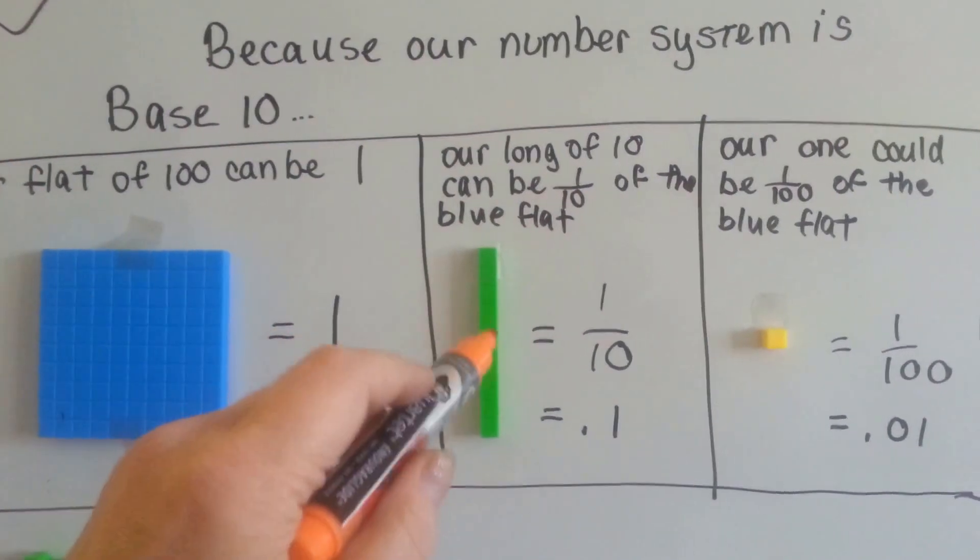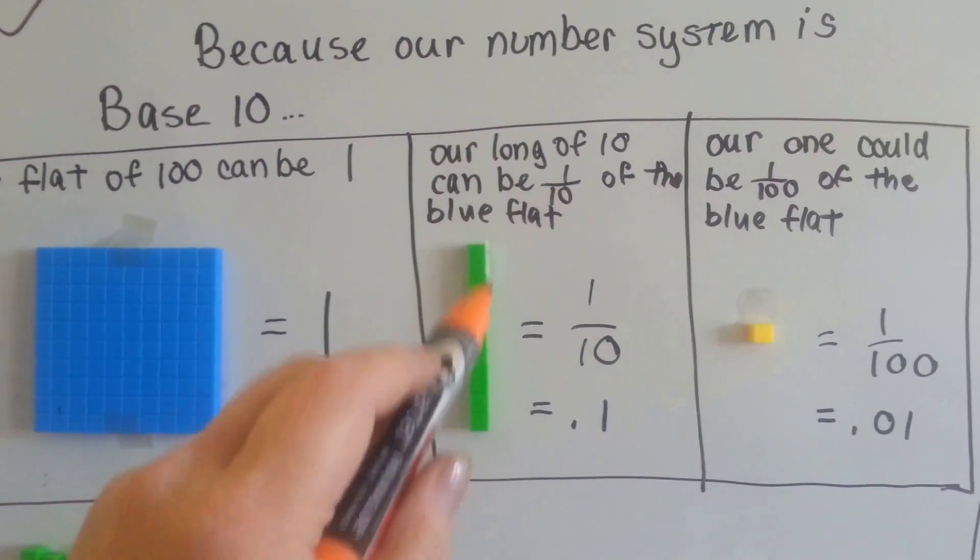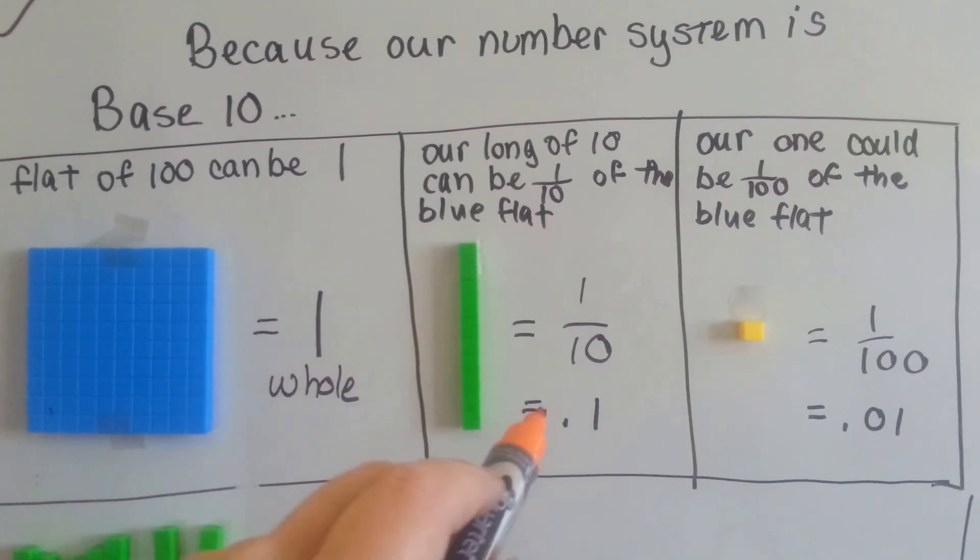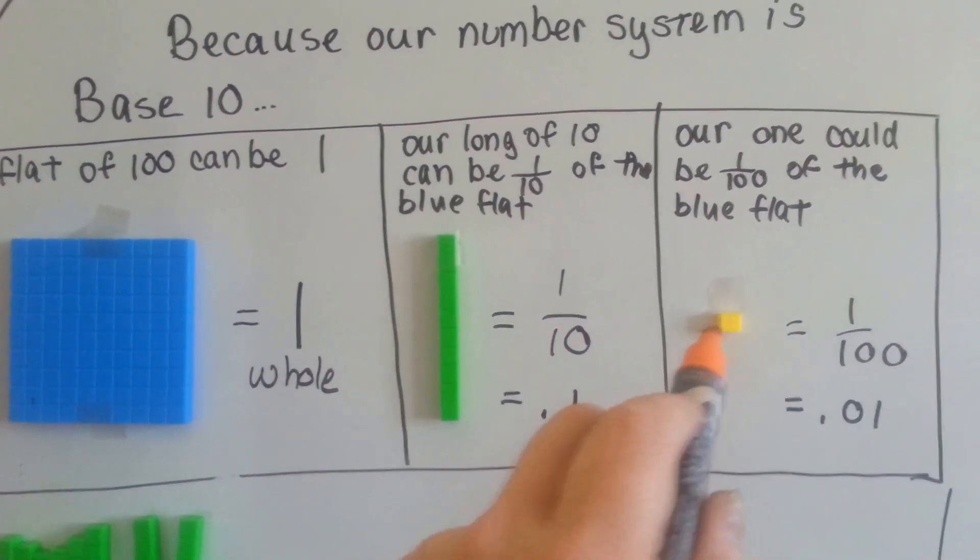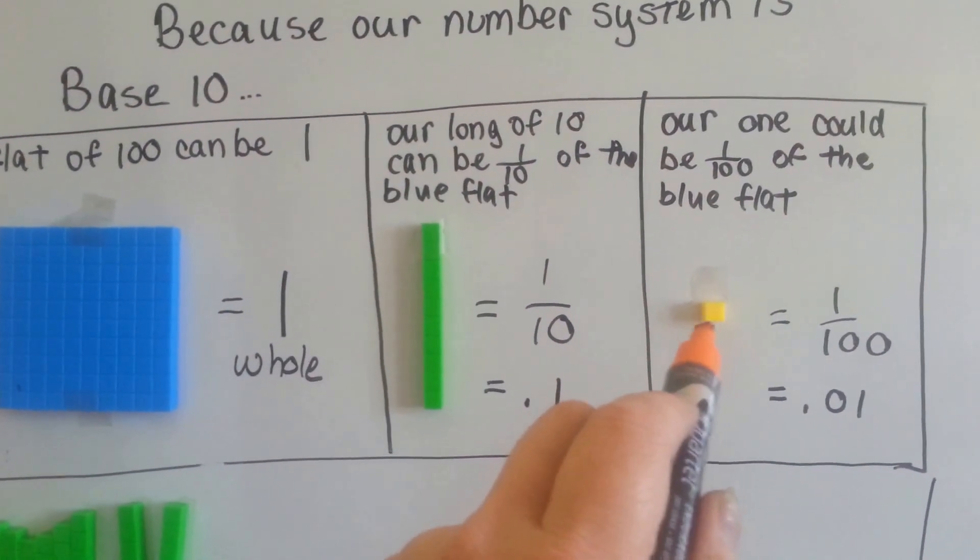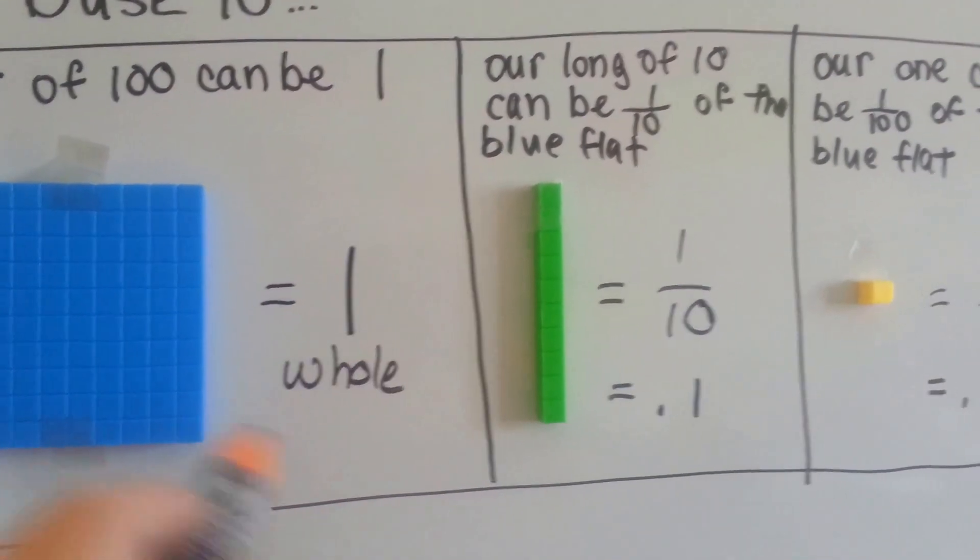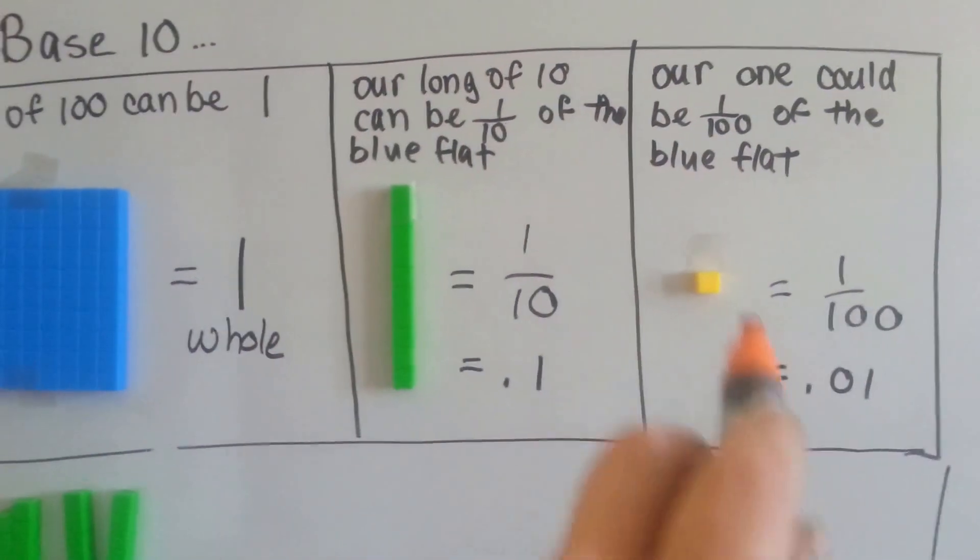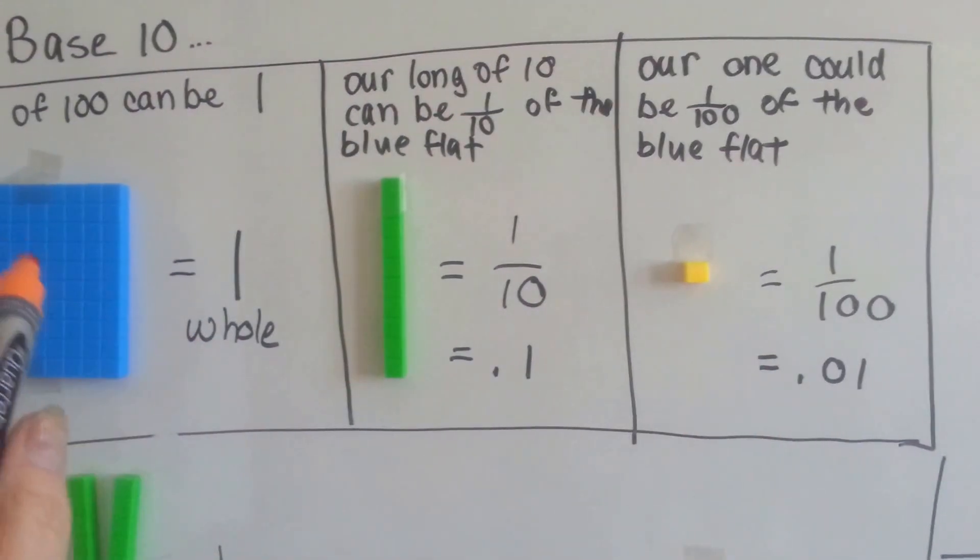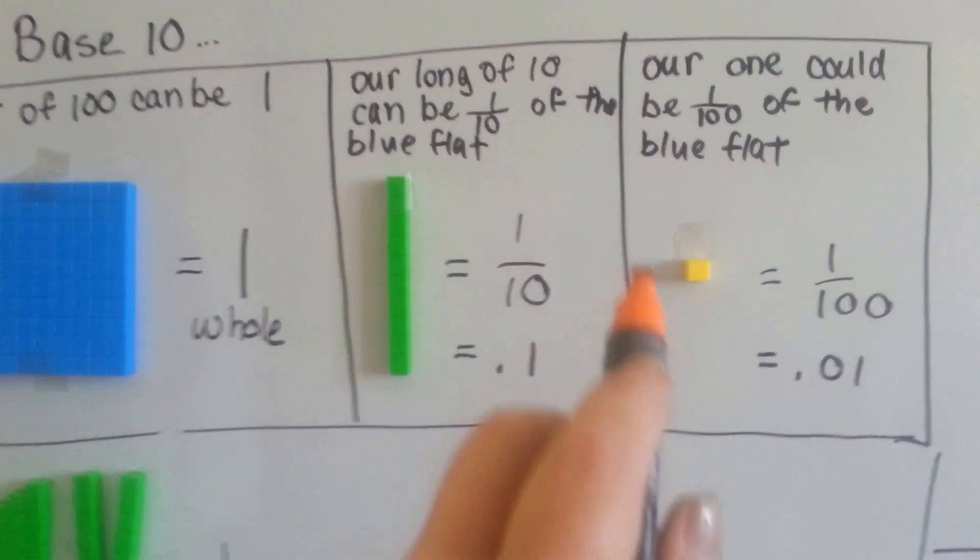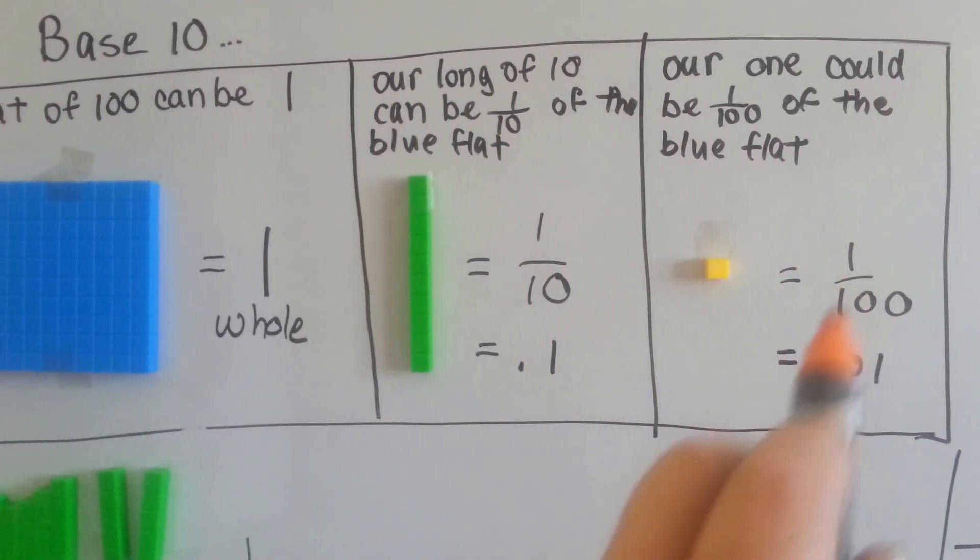Because there's 10 of these in here, we can say that this is one tenth, or point one. Because there's 100 of these little yellow guys inside of here, you can see one little cube right there, we can say this little yellow guy is one one-hundredth of that. So we can use it to represent one hundredth.